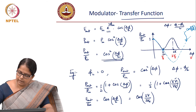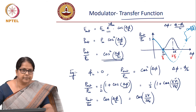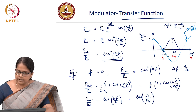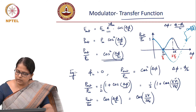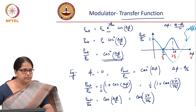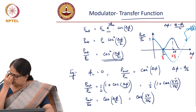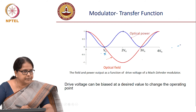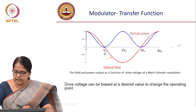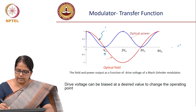For voltages beyond V_pi, the field transfer function goes negative, meaning there is a phase shift of pi in the output field. However, mod-square of that is still power, so the power is always positive — power never goes negative. Field going negative simply indicates a phase shift of pi between the two arms, corresponding to the voltage V_pi. The blue curve represents power and the field transfer function is the cosine curve.